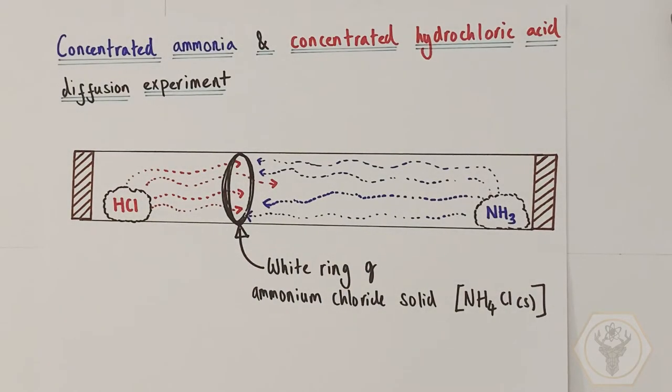Our third example is a classic teacher demonstration of the diffusion of gases. It involves taking a cotton wool bud soaked in concentrated hydrochloric acid and placing it into a sealable gas diffusion tube. On the other side of that tube, you place a cotton wool bud soaked in concentrated ammonia solution. Both the HCl and the NH3 are highly volatile liquids and therefore they will evaporate readily to produce gaseous molecules of hydrogen chloride and gaseous molecules of ammonia. They then diffuse along this diffusion tube towards each other.